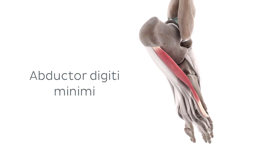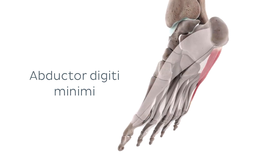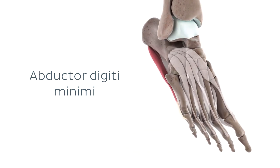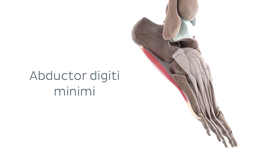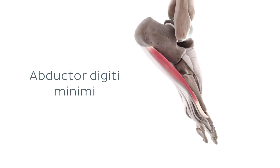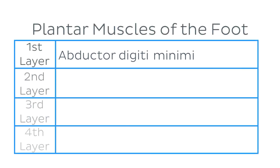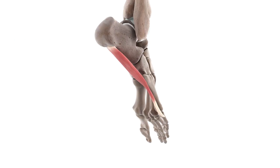Of course we cannot learn about the functions of any muscle without first refreshing our memories of its anatomy, so we'll begin with the abductor digiti minimi muscle. As you can see on our model here, the abductor digiti minimi is a long thin muscle located along the lateral border of the plantar aspect of the foot. If you learn your plantar muscles by layers, note that this muscle is found in the first layer of plantar muscles.